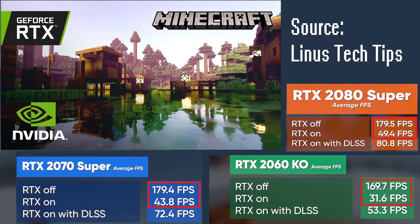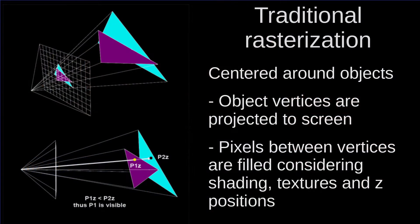Although ray tracing is relatively simple, it requires a lot of processing, which is why most games use traditional rasterization. Rasterization is a bit more difficult to understand, but requires less processing. Everything is made up of polygons, like triangles, and then the vertices are projected on the screen, and after that the pixels between the vertices are filled according to shading rules, textures and relative position of other objects.